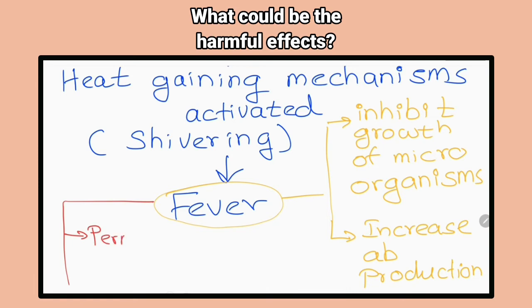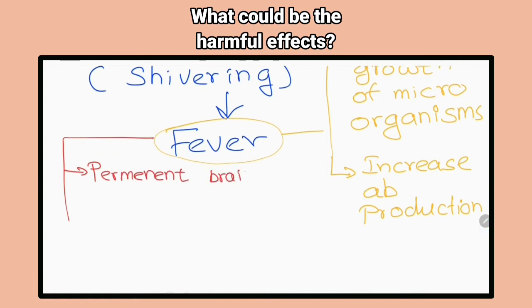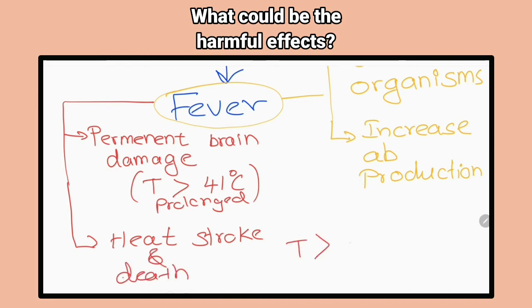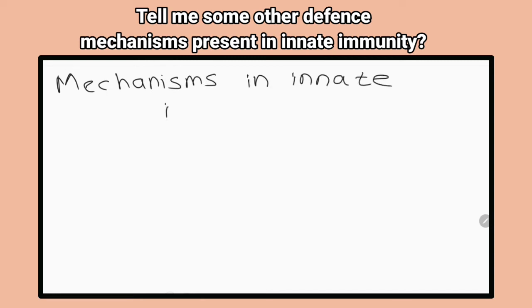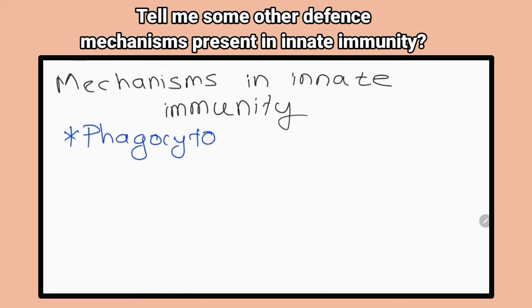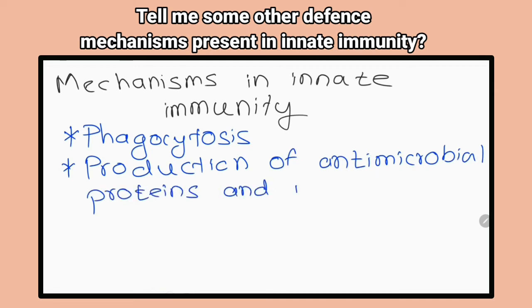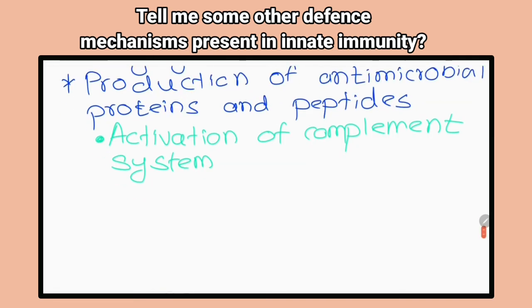What could be the harmful effects of fever? When it is prolonged and temperature is elevated more than 40 degrees Celsius, it can cause permanent brain damage, heat stroke and death. What are some other defense mechanisms present in innate immunity? Phagocytosis, production of antimicrobial proteins and peptides, activation of the complement system, release of interferons.